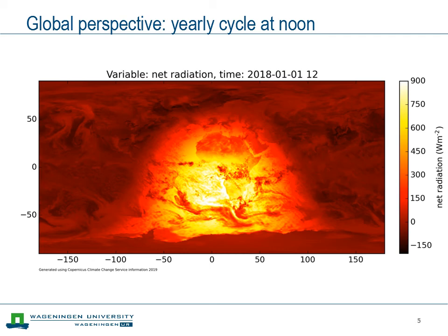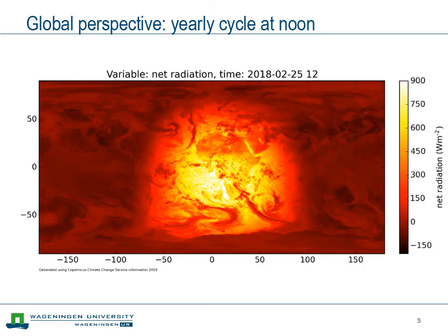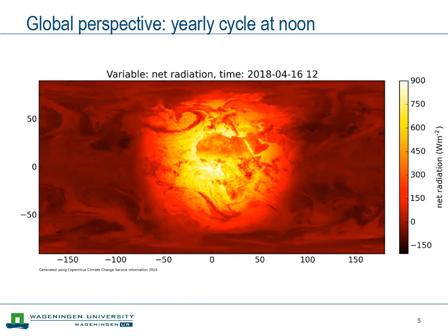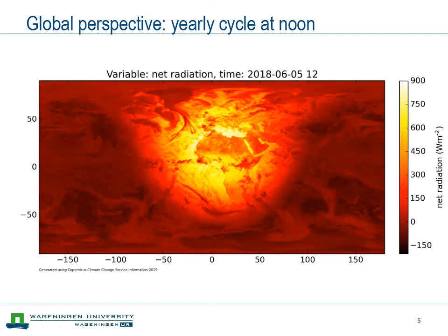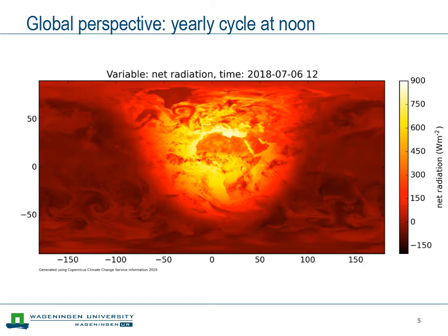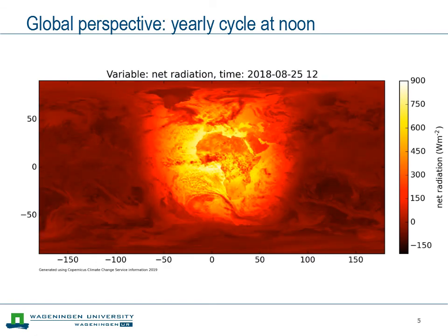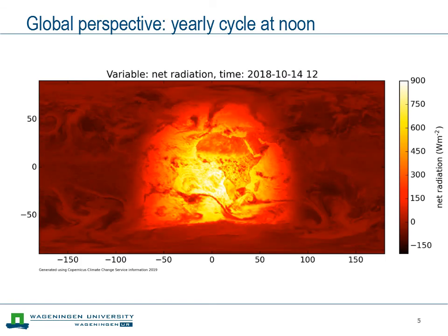We start on January 1st and see the bright spot has moved to the south because it's winter — the Sun is overhead further to the south. Following the movie, we see the bright spot staying at the same location with a lot of variation due to clouds, and then gradually moving northward. By April it's right overhead over Africa, and Europe already starts to get more and more radiation. In August it reaches our own summer, and by September it moves back over the equator and further south again.